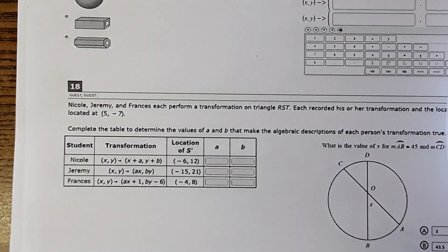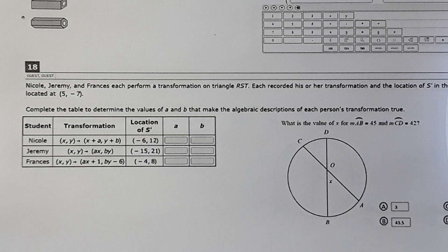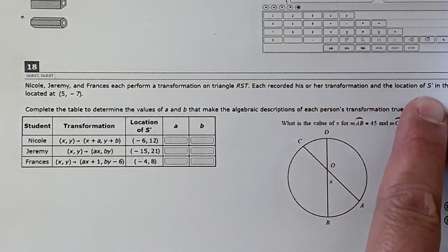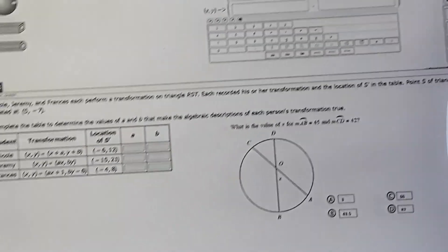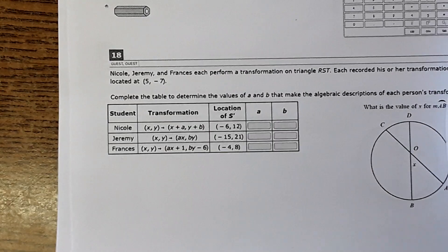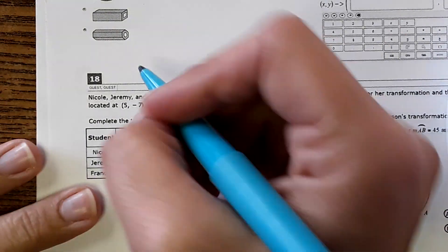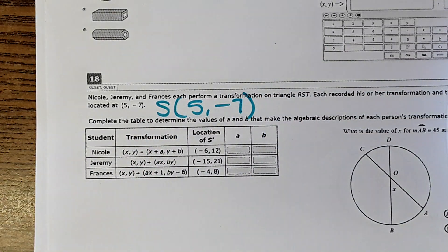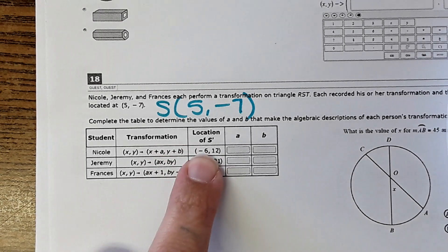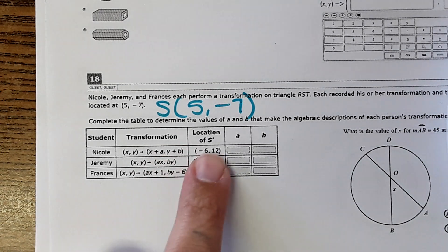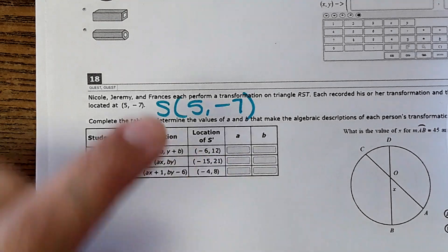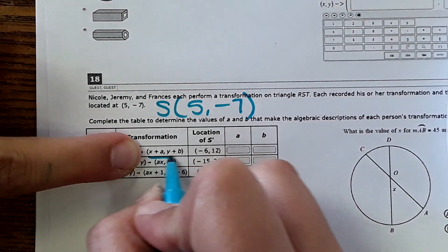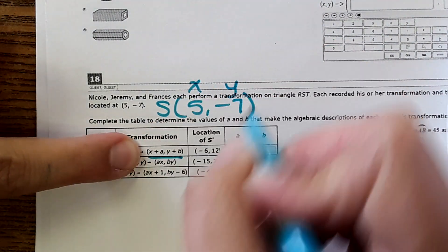Moving down to number 18: it says Nicole, Jeremy, and Francis each perform a transformation on triangle RST. Each recorded his or her transformation and the location of S prime in the table. Point S of triangle RST is located at (5, -7) — that is the original point. S prime is at negative 6, 12, and it shows this is a translation, so this would be X and this would be Y.